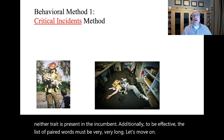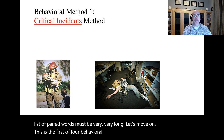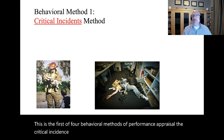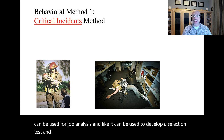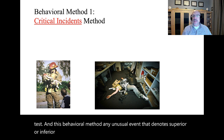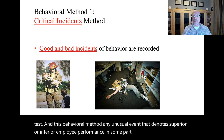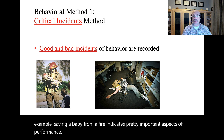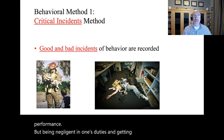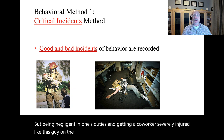This is the first of four behavioral methods of performance appraisal. The critical incidence method can be used for performance appraisal, much like it can be used for job analysis and like it can be used to develop a selection test. In this behavioral method, any unusual event that denotes superior or inferior employee performance in some part of the job is recorded. For example, saving a baby from a fire indicates pretty important aspects of performance, but being negligent in one's duties and getting a co-worker severely injured indicates inferior performance.